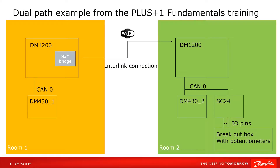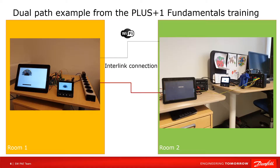The forwarder uses a display and joystick in the cabin to control the driverless harvester. In this video I will show the principle of M2M bridging using a simplified example that is an extension of the Plus One Fundamentals dual path example. I want to demonstrate how to virtually connect the DM430-1 in room 1 to the SC24 in room 2 via their CAN buses. The M2M connection helps bridge these two devices together so both can send messages to each other as if they are using the same physical CAN bus 0. Here is a picture of the setup I use in this video.